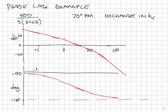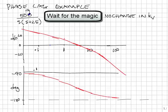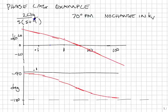Here's an example of using a phase lag controller. I've already written down the system. The plant is 20 over S times S plus 4. So this already has an integrator in it.